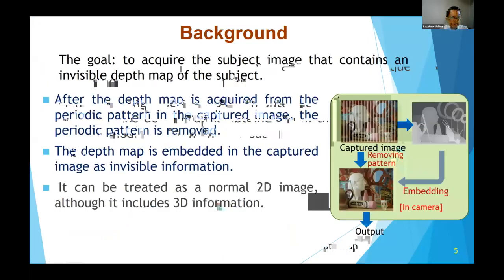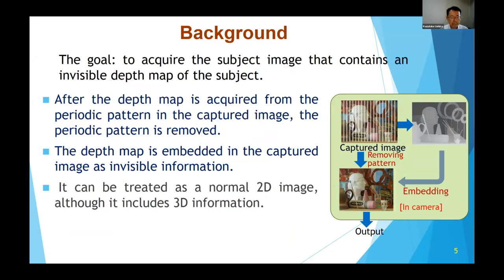The final goal of our study is to acquire a subject image that contains an invisible depth map of the subject. After the depth map of the subject is acquired from the periodical pattern in the captured image, this pattern is removed from the captured image, and then the depth map is embedded in the captured image as invisible information. This final output image can be treated as a normal 2D image for transmission and storage, although it includes 3D information in the form of a depth map. And if necessary, we can read out the depth map and convert the 2D image into a 3D image.